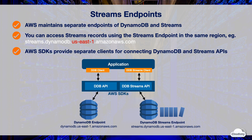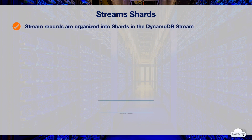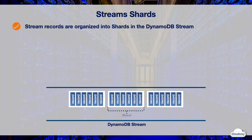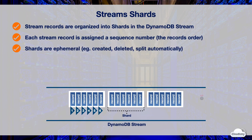Your applications can connect to the DynamoDB and Streams APIs by instantiating the clients. Stream records are organized into shards; each stream has multiple shards and each shard has multiple stream records. A shard contains information about how to iterate through the stream records. Each stream record is assigned a sequence number reflecting the order in which it was published. Shards are ephemeral — they can be created, deleted, or split automatically — and stream records within a shard are removed automatically after 24 hours.